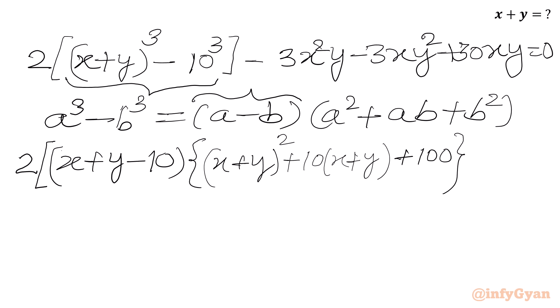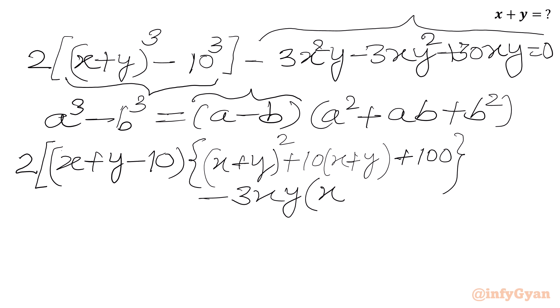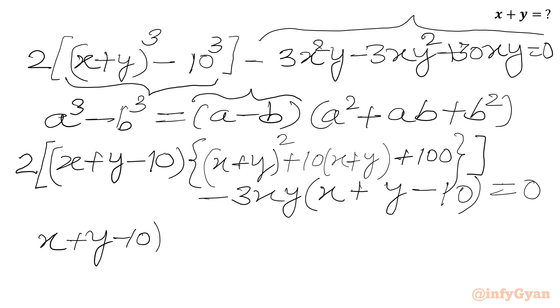Now we have three remaining terms: minus 3x²y minus 3xy² plus 30xy. I will take minus 3xy common from these three terms. So minus 3xy times (x + y − 10). Now I can see that (x + y − 10) is a common factor in both parts.